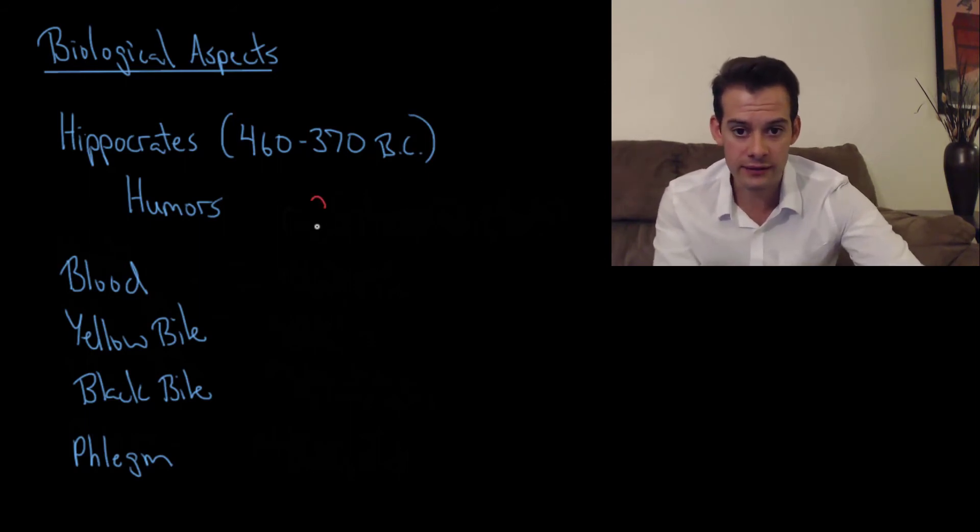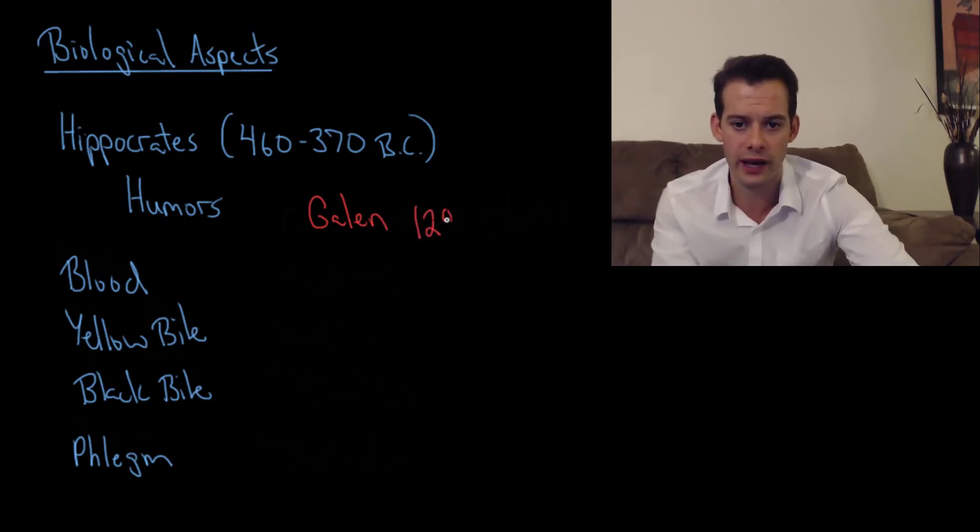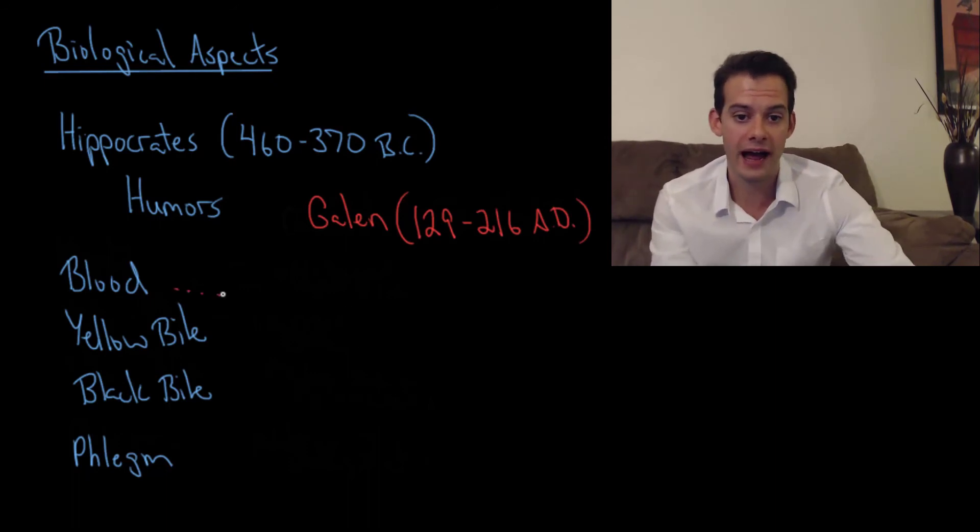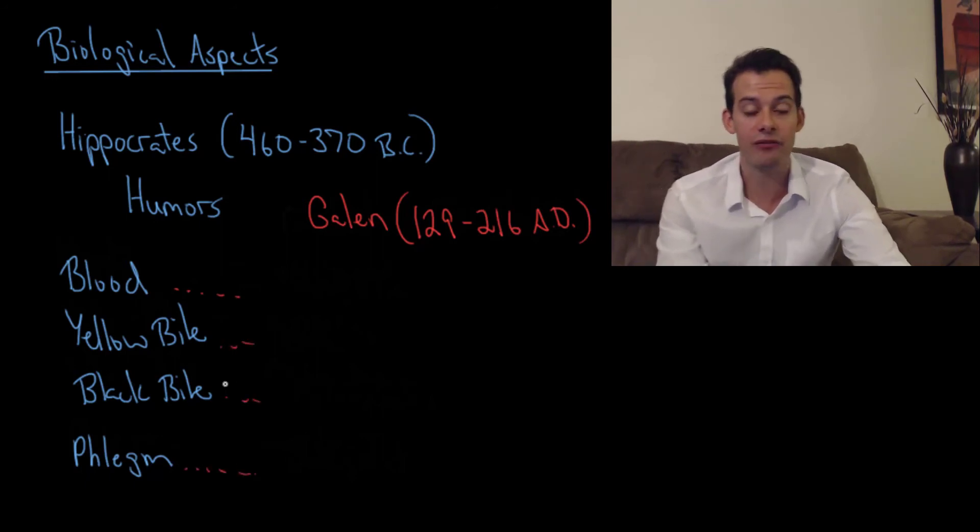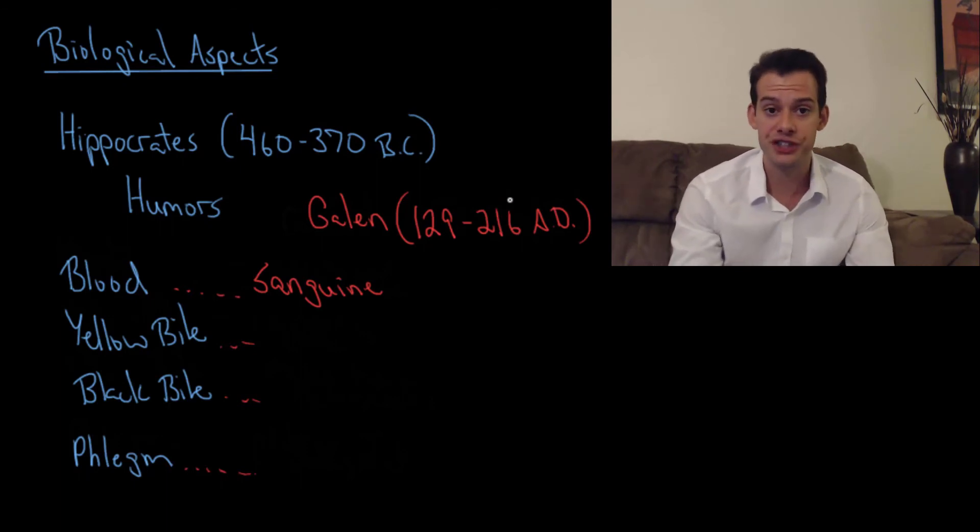Now Galen took Hippocrates work and Galen lived from 129 to 216 AD. And he adopted this to define four different personality types based on high levels of a particular humor. So the idea was if you have a high level of blood then you'd be described as sanguine. And this refers to somebody who's optimistic, upbeat, cheerful.